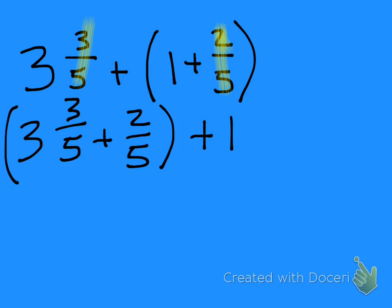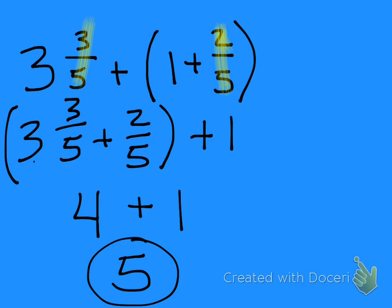In my head, I know 3/5 plus 2/5 equals 1 whole, plus my 3 is going to give me 4, plus the 1 that I had out here is equivalent to 5.